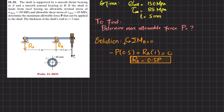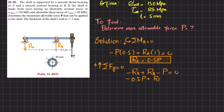To find RB, we use the sum of all forces in the y-direction equal to zero: RA − P + RB = 0, so 0.5P − P + RB = 0, giving RB = 1.5P.